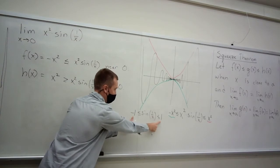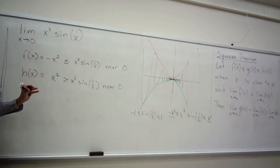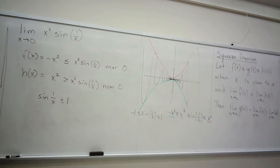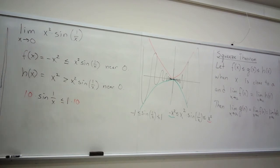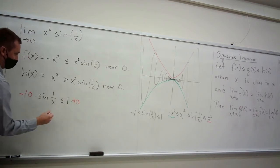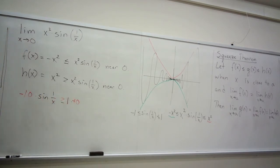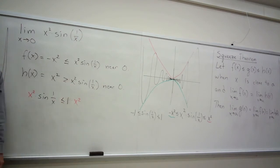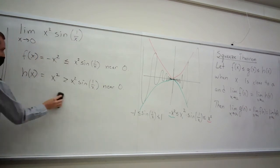Sine is always bounded by negative 1 and 1 — it's never going to be a number bigger than 1. So take this inequality: sine of 1 over x is less than or equal to 1. If I multiply both sides of this inequality by a positive number, the inequality stays the same. Take any number and square it — that's positive. That maintains the inequality, which means x squared times sine of 1 over x is less than or equal to x squared. And we do the same thing to show the lower bound — the inequality just flips. Perfect.